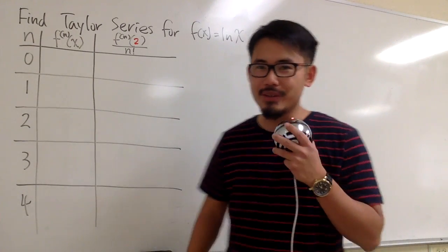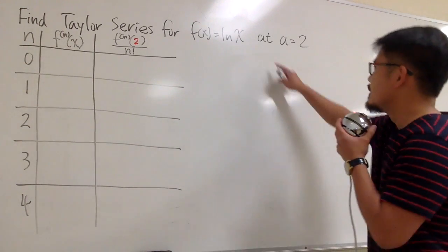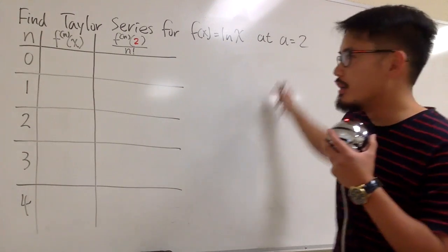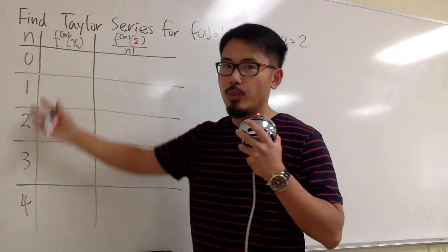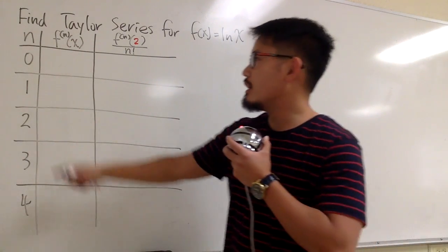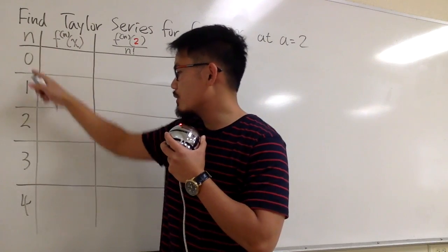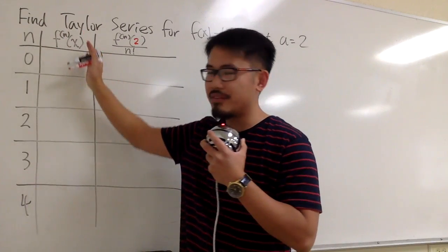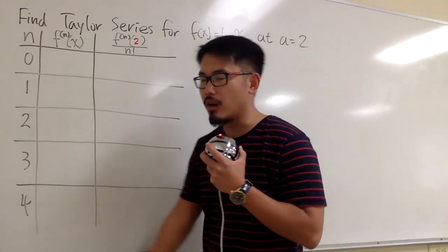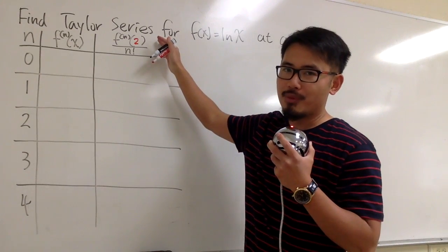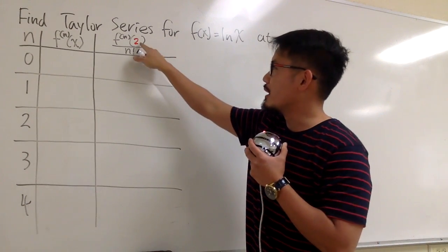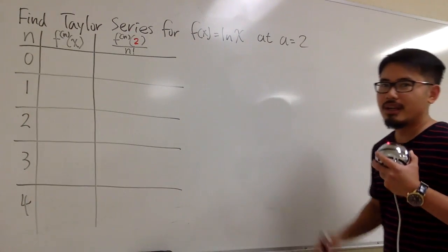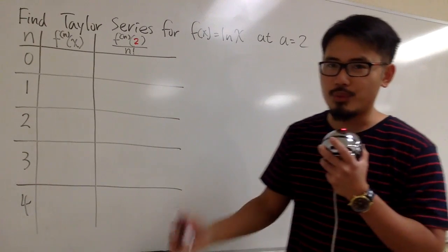Adam, this video is for you. We're going to find the Taylor series for ln(x), centered at a equals 2. As you can see, we are ready because we have this table. n goes from 0 to 4 — I think that should be enough. We have the nth derivative column and then the Taylor formula. Be sure you plug in 2 right here because the question says so. Now let's just get to work.